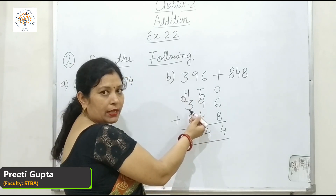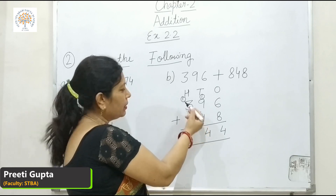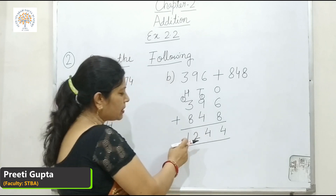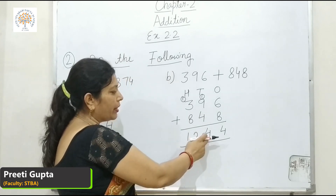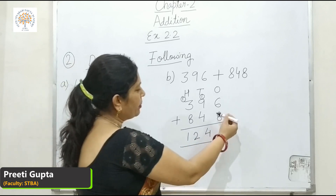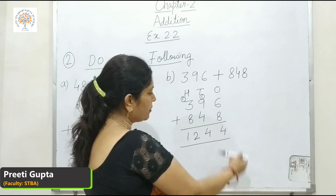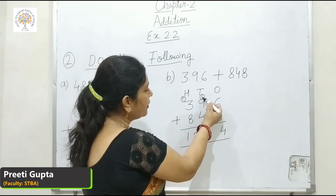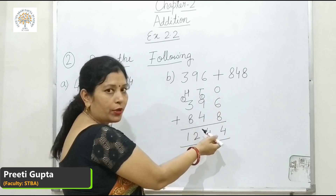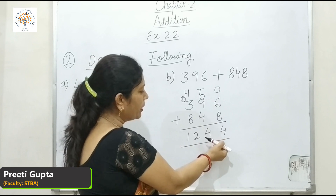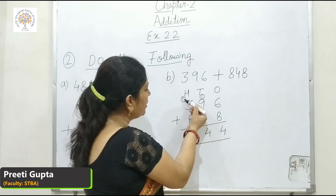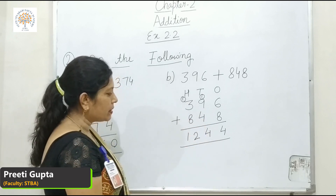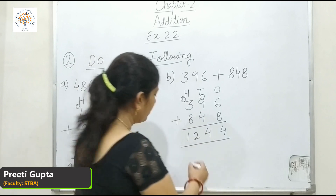8 plus 3 is 11, and 11 plus 1 is 12. So our answer is 1244. I repeat: 8 plus 6 is 14 — write 4 here and carry 1 here. 9 plus 4 is 13, and 13 and 1 is 14 — write 4 here and carry 1 here. 3 and 1 is 4, and 4 and 8 is 12. So our answer is 1244.